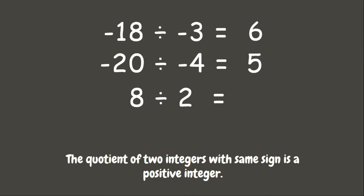Next: positive 8 divided by positive 2. Since they are both positive integers, the answer must be positive, so 8 divided by 2 is positive 4. And the last one: positive 14 divided by positive 7 — the answer is positive 2.